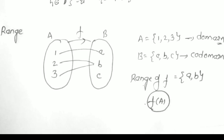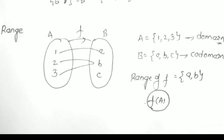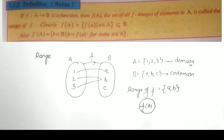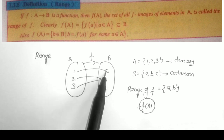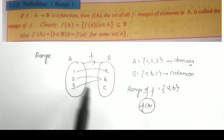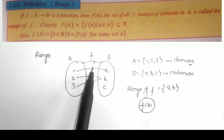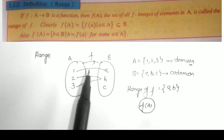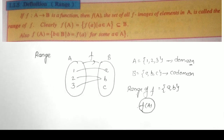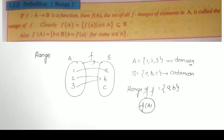Formally: if F: A→B is a function, then F(A) — the set of all F-images of elements in A — is called the range of the function. Directly stated: only the connected elements in set B form the range of the function, and that is denoted by F(A). These are the most important and useful definitions of functions.